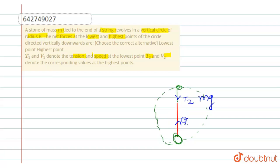T1 is an upward force and downward is mg. Now we can easily find the net force at the highest point and the lowest point with the help of FBD. And now we find the net force at highest point, which is equal to mg